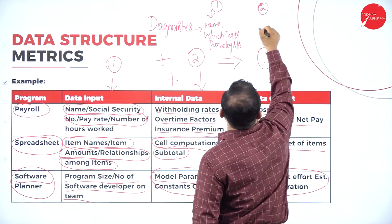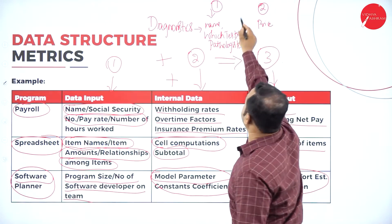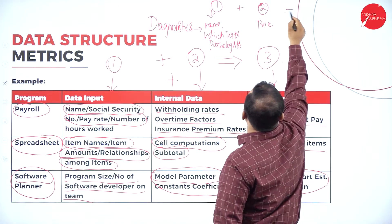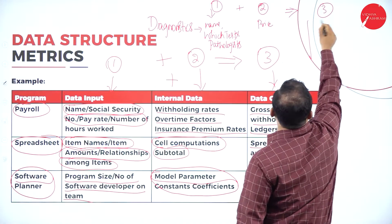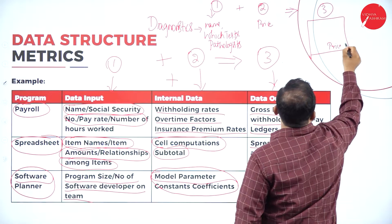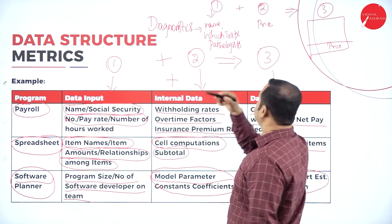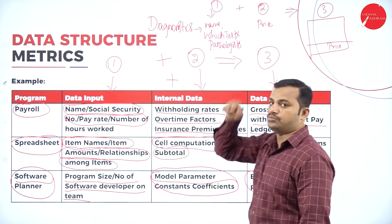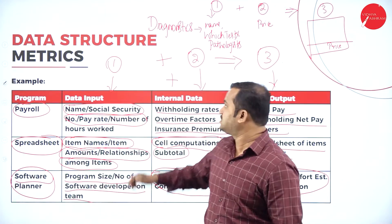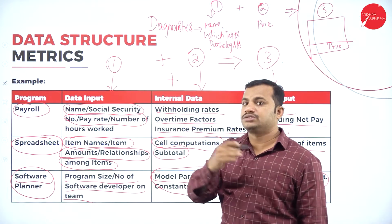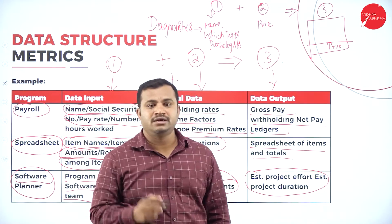In column 2 we have the price per test, and after all this processing — column 1 plus column 2 — we are going to produce the output. The report is going to be generated: the total price or cost of the diagnostics information is calculated in column 3. That is the output — the receipt or total cost of the test — and the report is generated for the patient. That is considered in the data output.